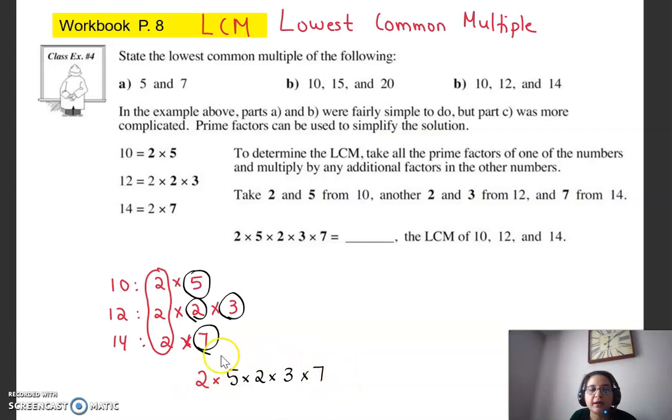And you multiply all of them. And when you multiply all of those numbers together, your two times five is 10, 10 times six is 60, and then 60 times seven is 420. So in this case, our lowest common multiple in here is 420.